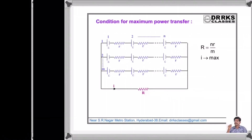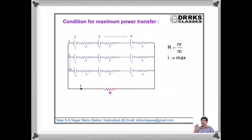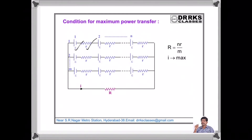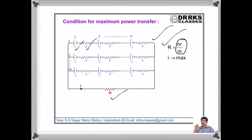So R = r. Consider a battery consisting of M rows where each row contains N identical cells of EMF E and internal resistance r, connected to an external resistance R. The total internal resistance is Nr/M. When this internal resistance equals the external resistance R, the current flowing through the circuit is maximum.